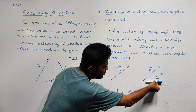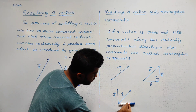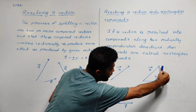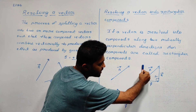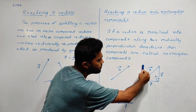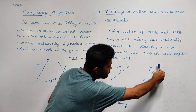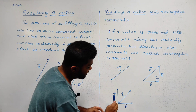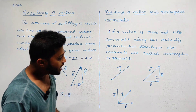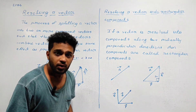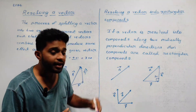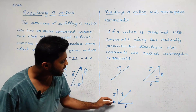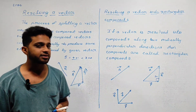If vector P is along the x-axis, it will not change the direction. If vector Q is along the y-axis, it will change the direction. We resolve vector A into rectangular components — vector P along x-axis and vector Q along y-axis.